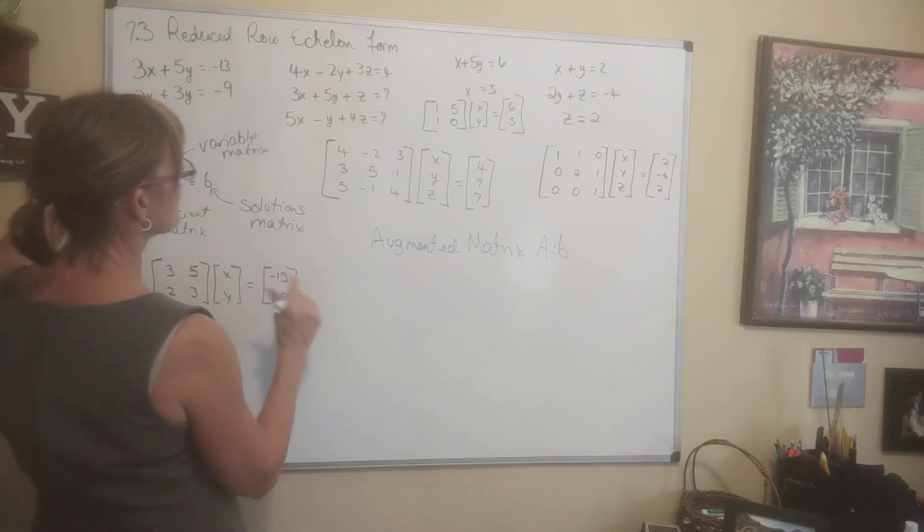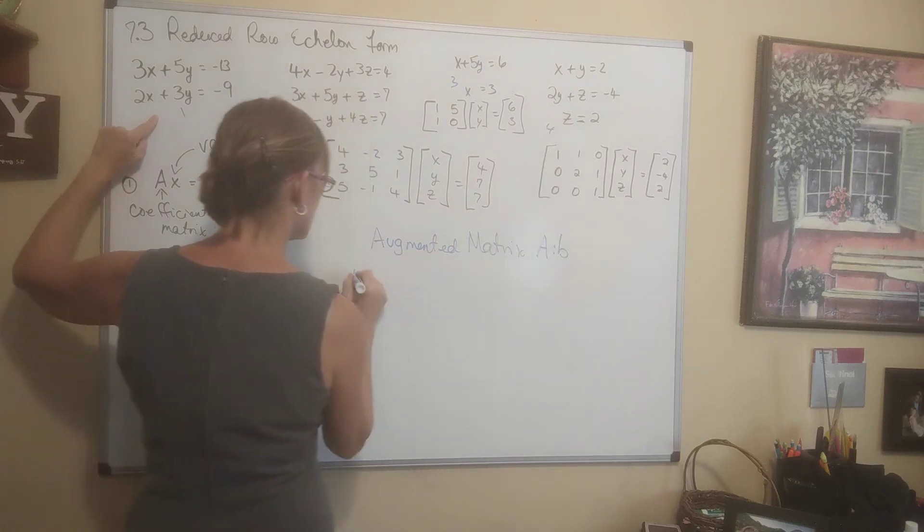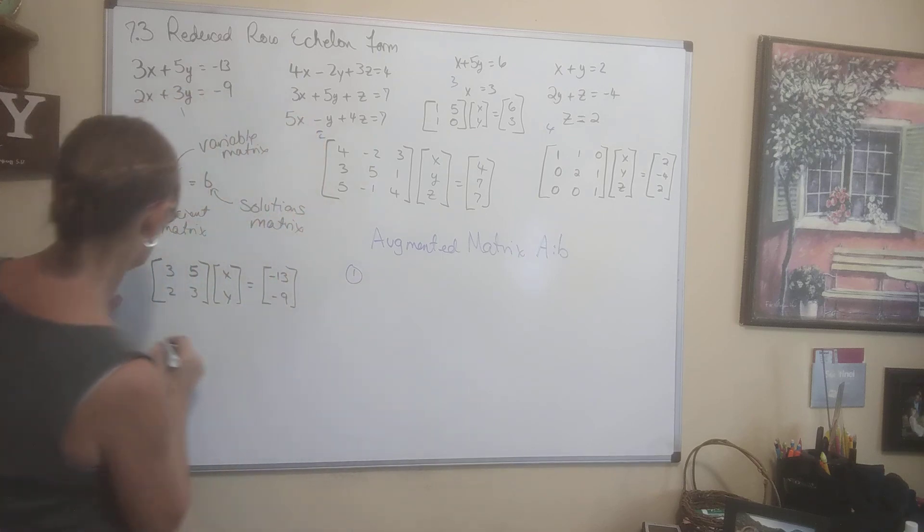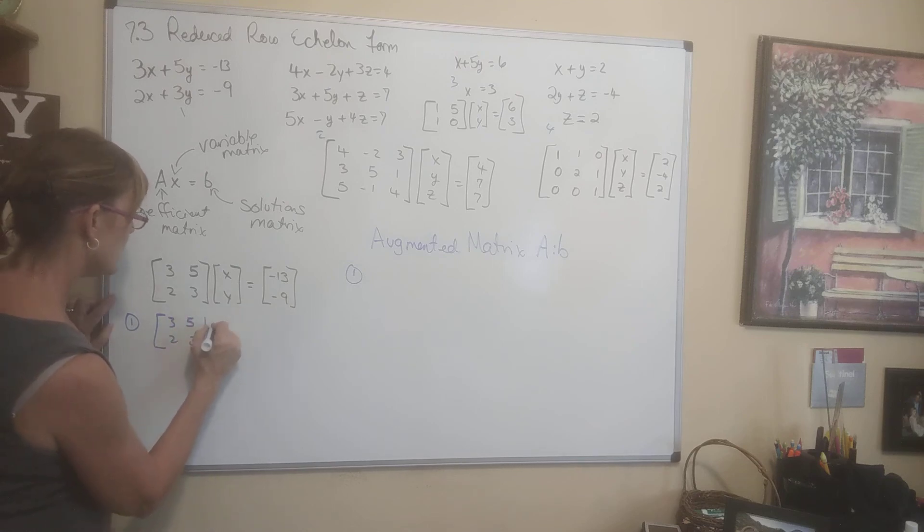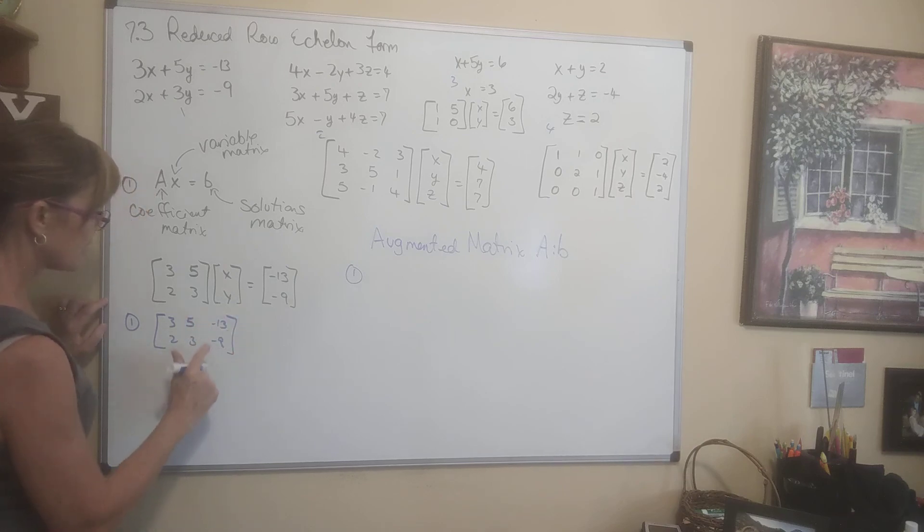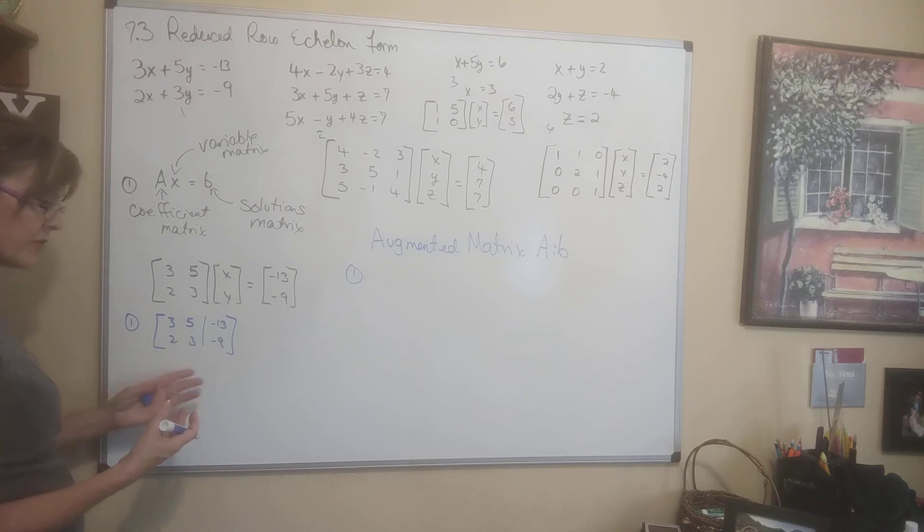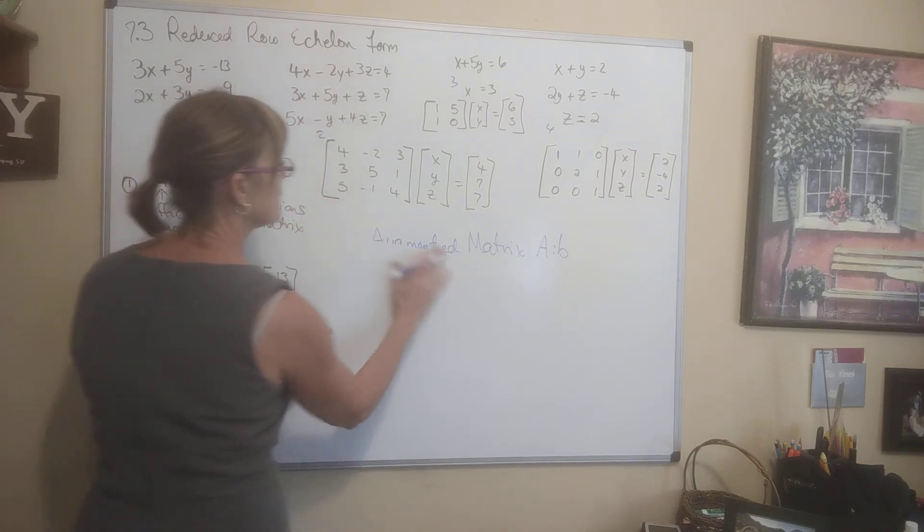So for this first one right here, the augmented matrix will be the coefficient matrix, which is right here. The augmented matrix would just be 3, 2, 5, 3, augmented add on negative 13, negative 9. This is the augmented matrix. This line, sometimes you don't have to have a line there, but I like to draw it to distinguish between the coefficient and the solutions. Now I don't have a 2 by 2. I have a 2 by 3.